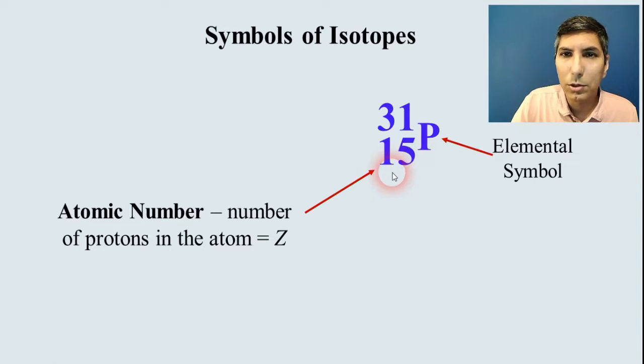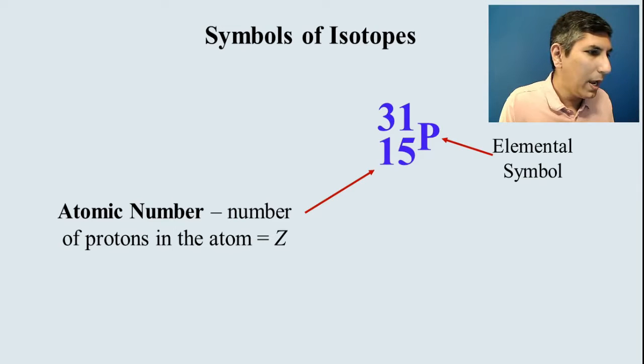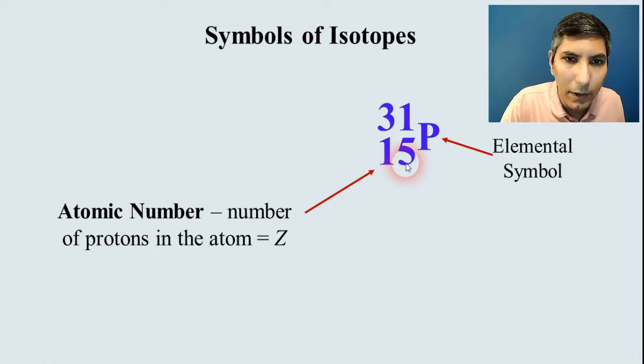This atomic number corresponds to the atomic number, that whole number on the periodic table for that element. That's another way that we know that this is phosphorus. If you have a periodic table handy, you can see that the atomic number 15 also corresponds to phosphorus. So this number down here should match up with the elemental symbol.